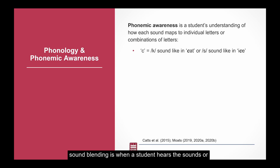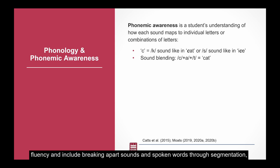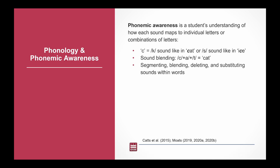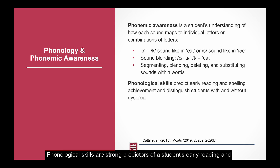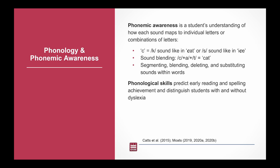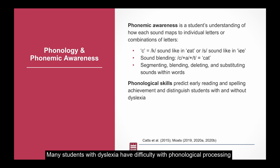For example, sound blending is when a student hears the sounds or phonemes k, a, t, and can blend them to say the word 'cat.' More advanced phonological processing skills are important for spelling and reading fluency, and include breaking apart sounds in spoken words through segmentation, blending sequences of speech sounds, deleting sounds, or substituting sounds within words to make new words. Phonological skills are strong predictors of a student's early reading and spelling achievement, and they distinguish students with and without dyslexia. These foundational skills are taught in preschool, kindergarten, and first grade. Many students with dyslexia have difficulty with phonological processing and need ongoing support through their school years.